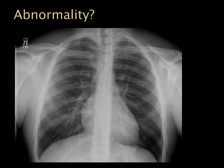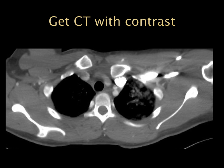On this chest x-ray, the abnormality is a difference in the level of the clavicles — they are uneven, and this is sternoclavicular joint dislocation. We can get a better analysis with a CT with contrast, which I prefer so we can evaluate the great vessels and make sure there's no compression of those vessels — which would be helpful for our orthopedic colleagues if they're going to operate.